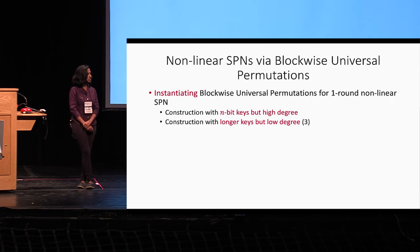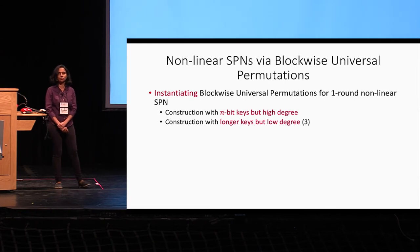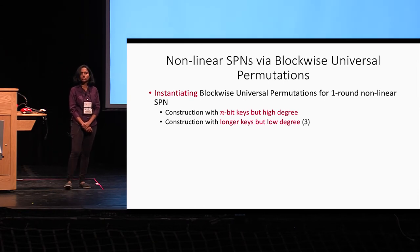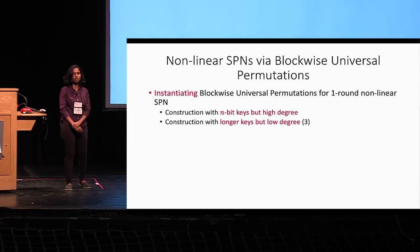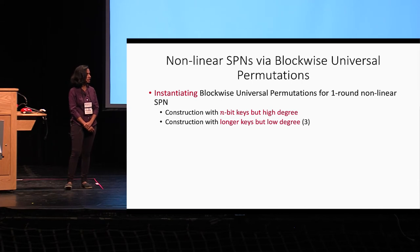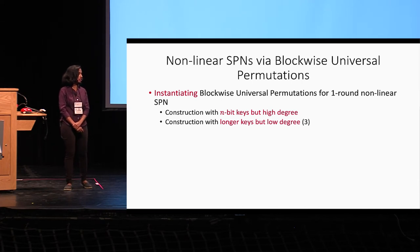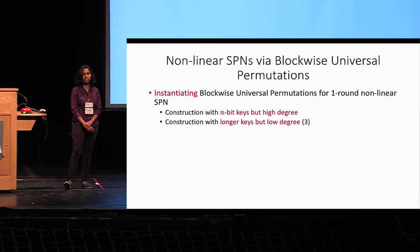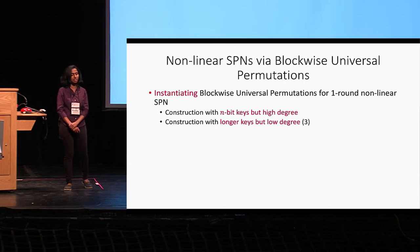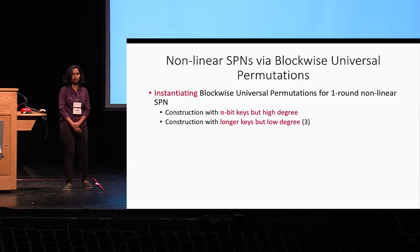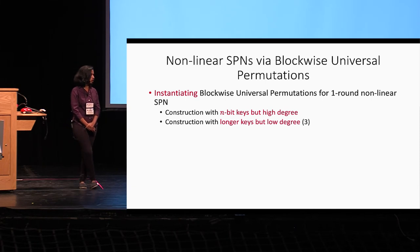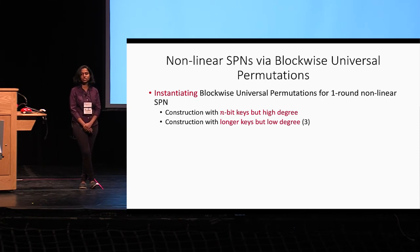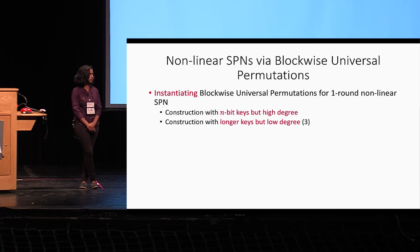For instantiating block-wise universal permutations, we show a few constructions in the paper: one with N-bit keys but high degree of the permutation, and another with longer keys but low degree — specifically degree three.